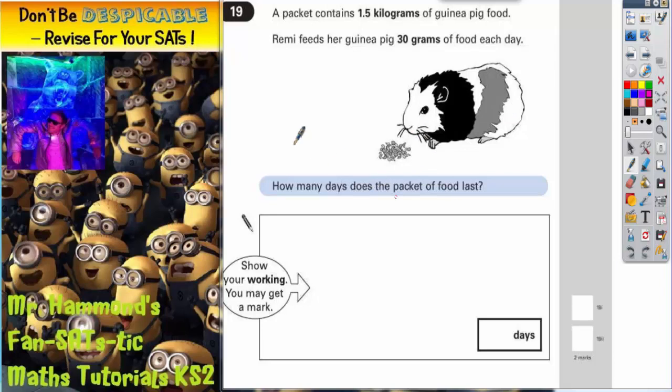Question 19 is all about units, grams and kilograms. It says a packet contains 1.5 kilograms of guinea pig food. Remy feeds a guinea pig 30 grams of food each day. How many days does the packet of food last for?